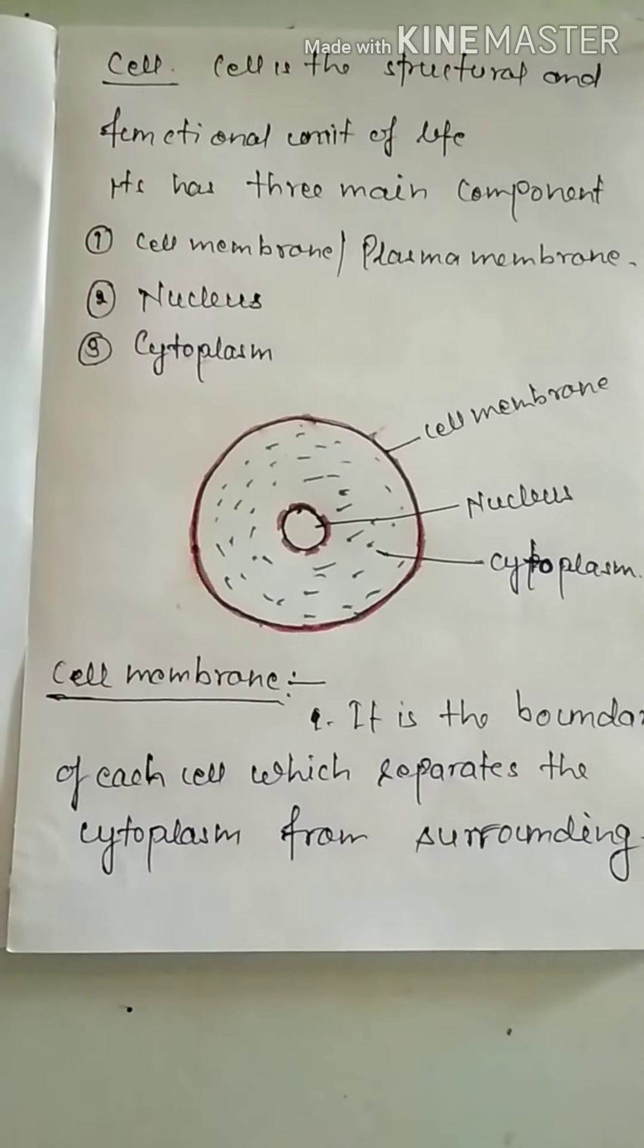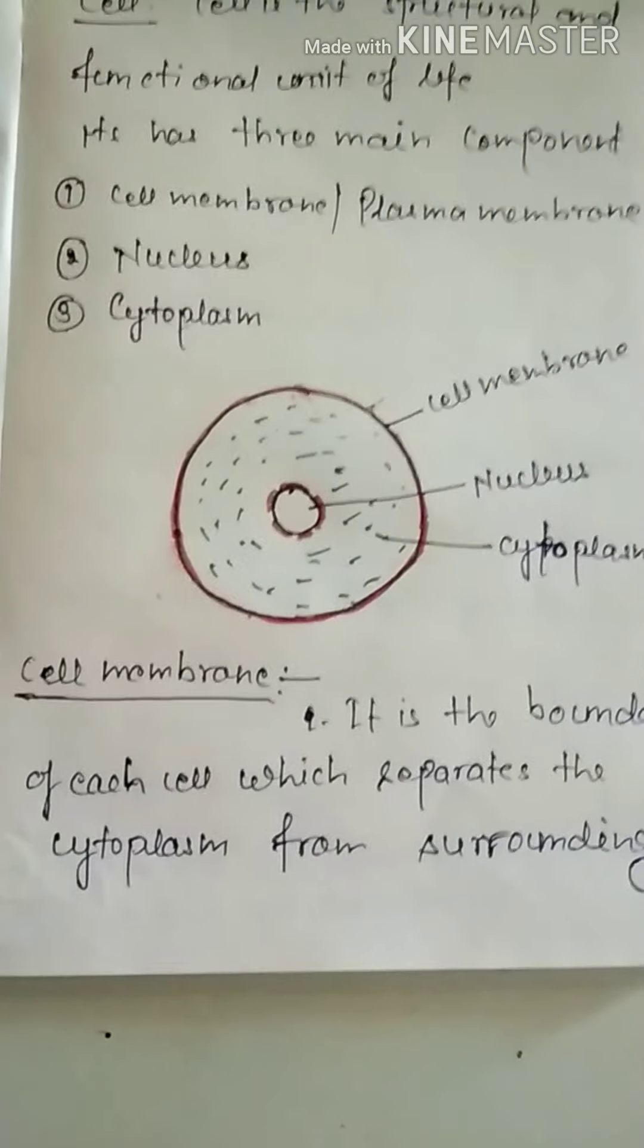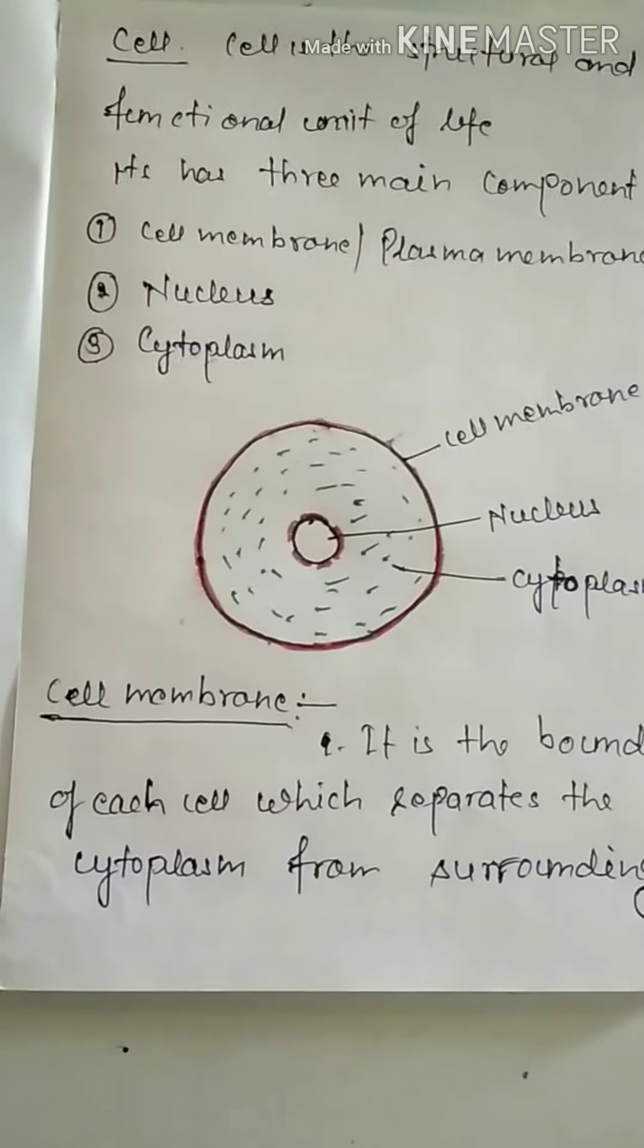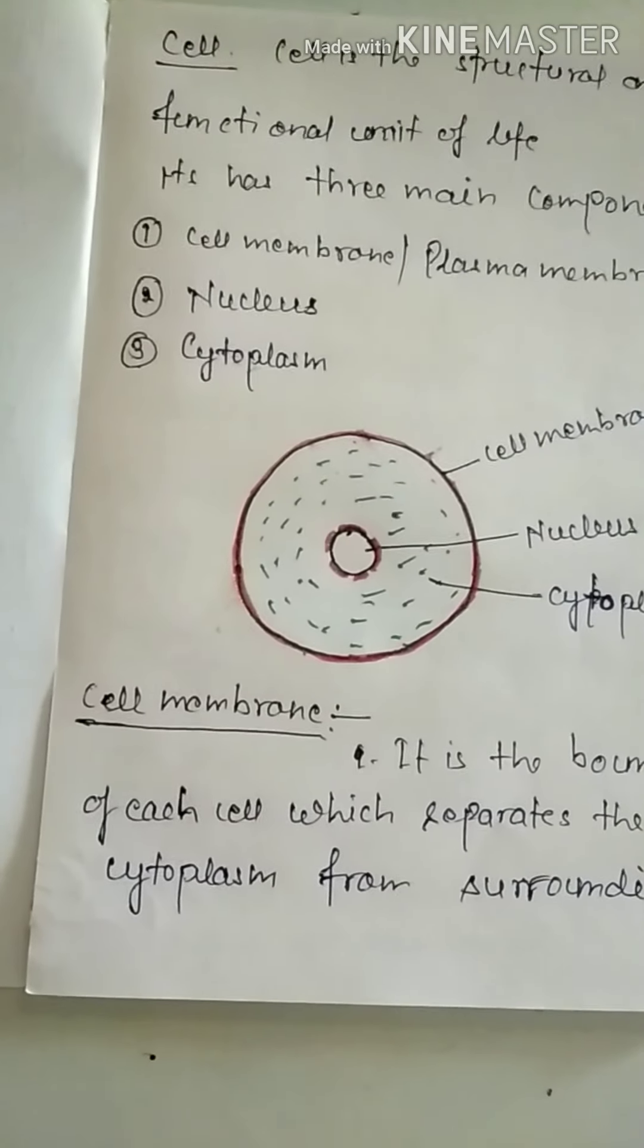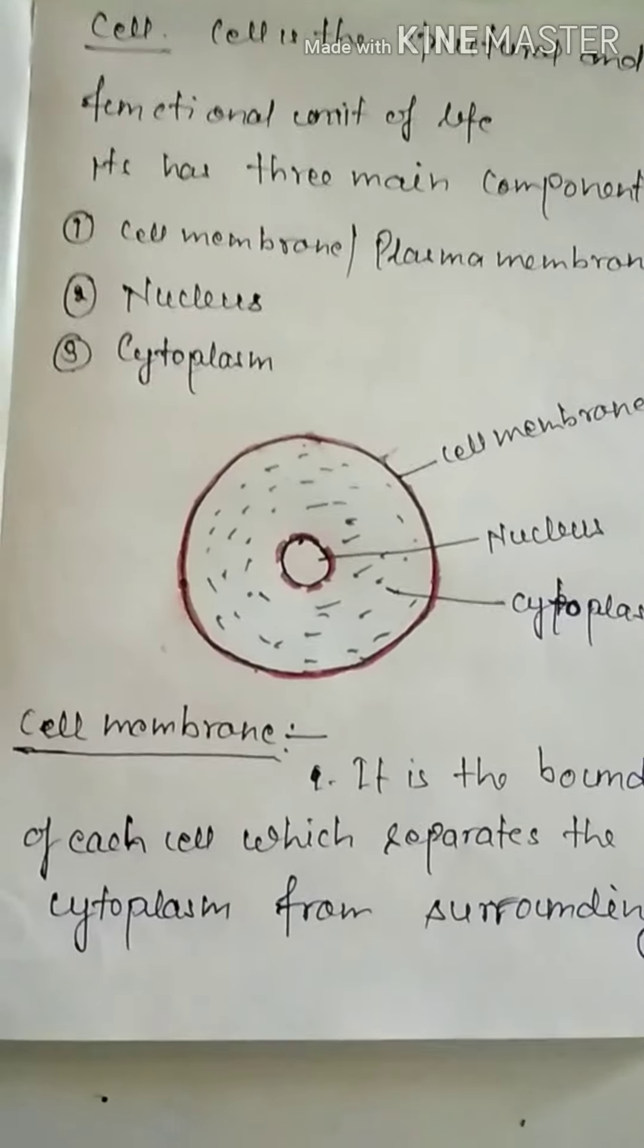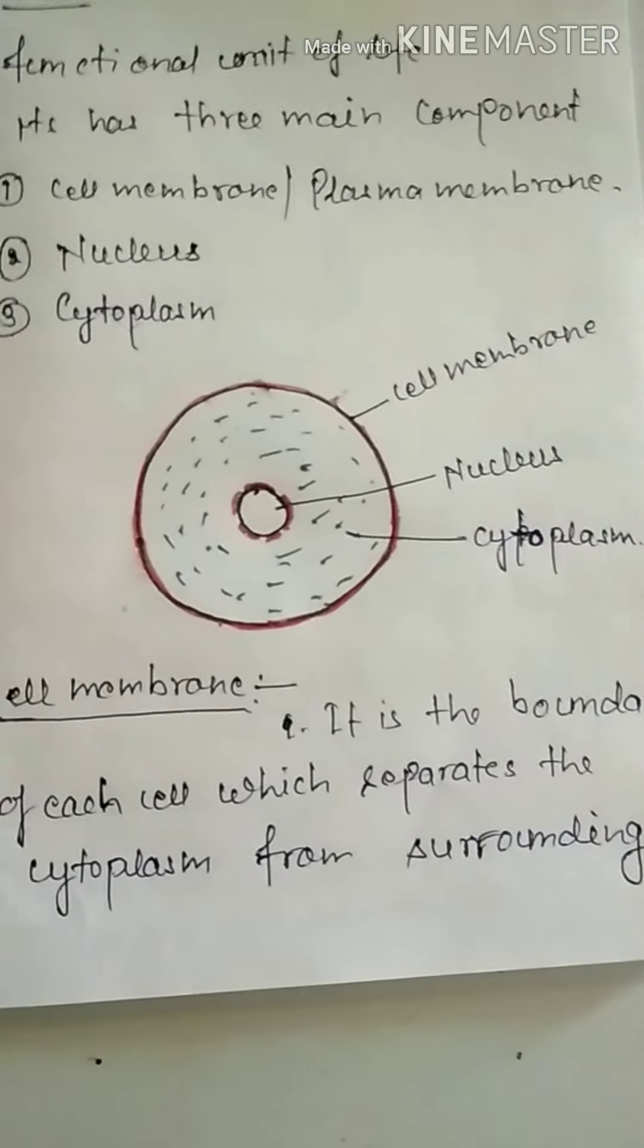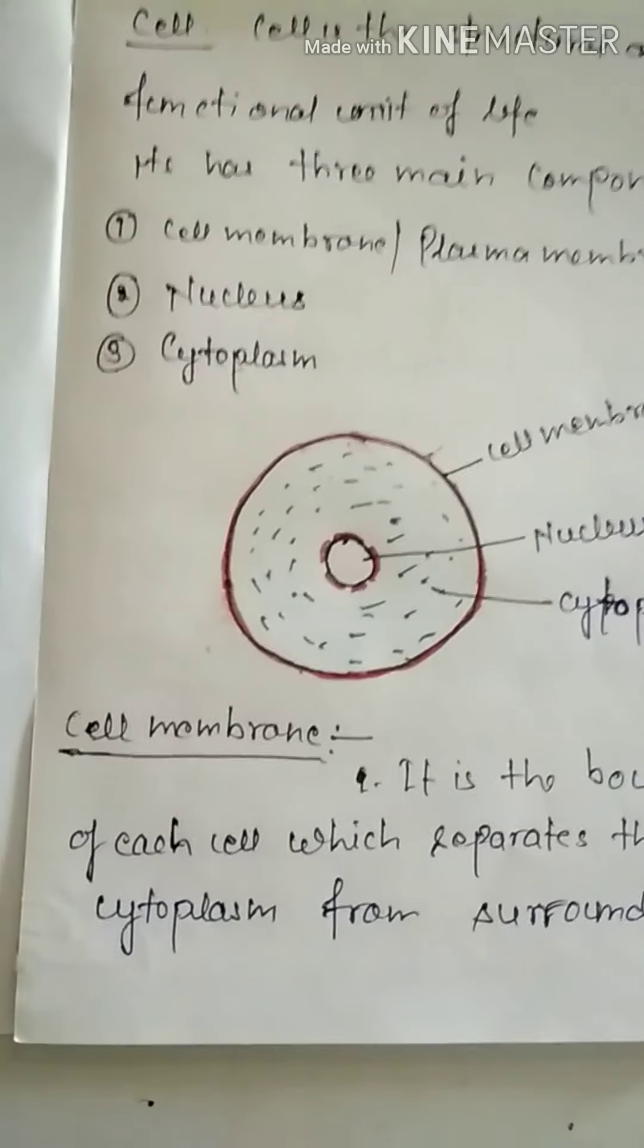Cell is the structural and functional unit of life and it has three main components: cell membrane or plasma membrane, nucleus, and cytoplasm. We see also in this figure the center part is the nucleus, jelly-like fluid is cytoplasm, and outer covering is cell membrane.